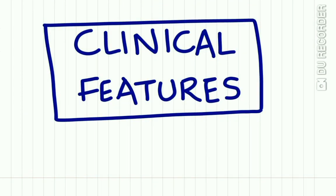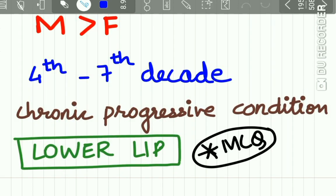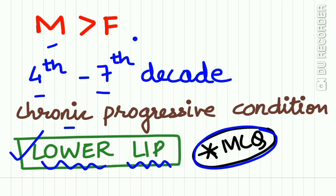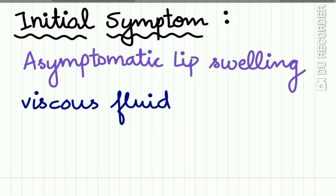The clinical features of Cheilitis Glandularis: males are affected more than females, and it mostly occurs from the fourth to seventh decade of life. It is a chronic progressive condition and it exclusively involves the lower lip — remember this, as it is a common MCQ point. The initial symptom is an asymptomatic lip swelling.